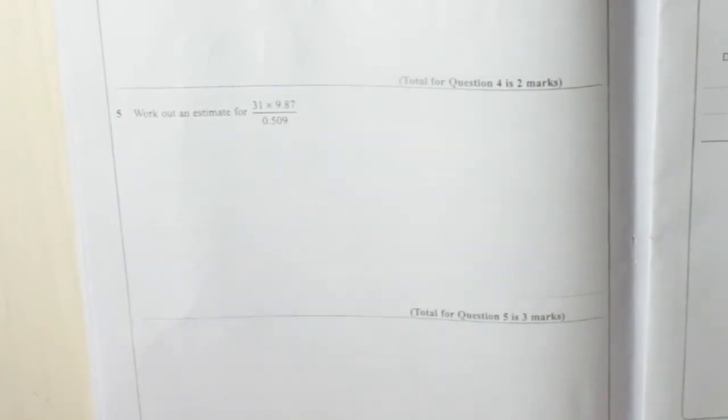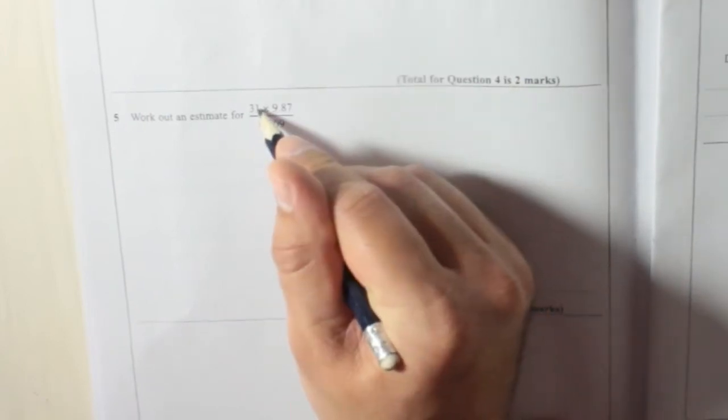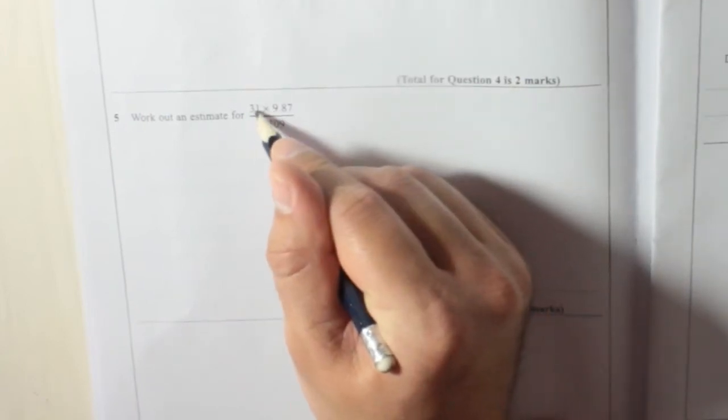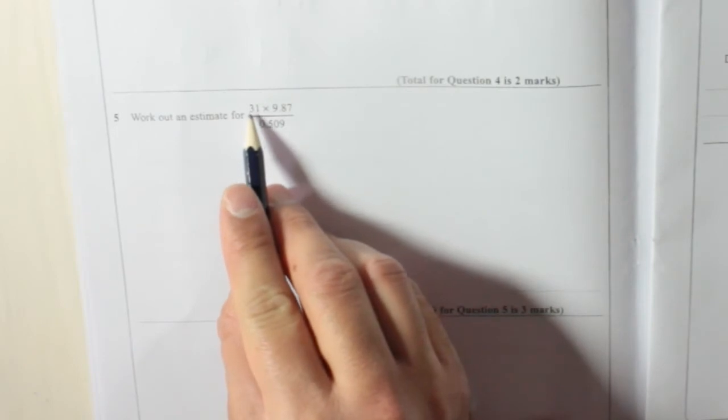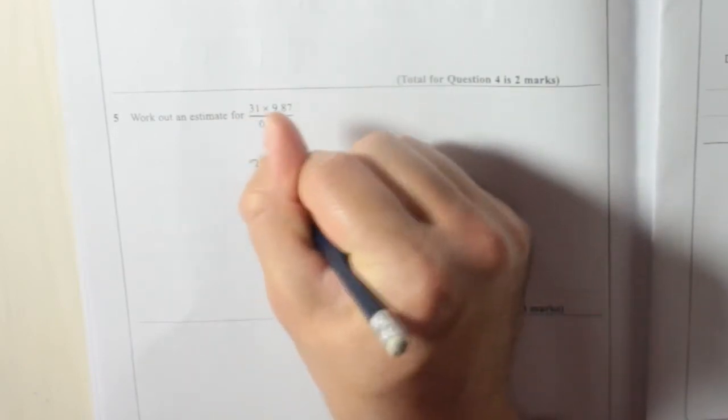Right, when you do estimates, you must round all the numbers to one significant figure. So, for example, 31 to one significant figure. There's the first significant figure, the 3. So round it to the nearest 10, which is 30.